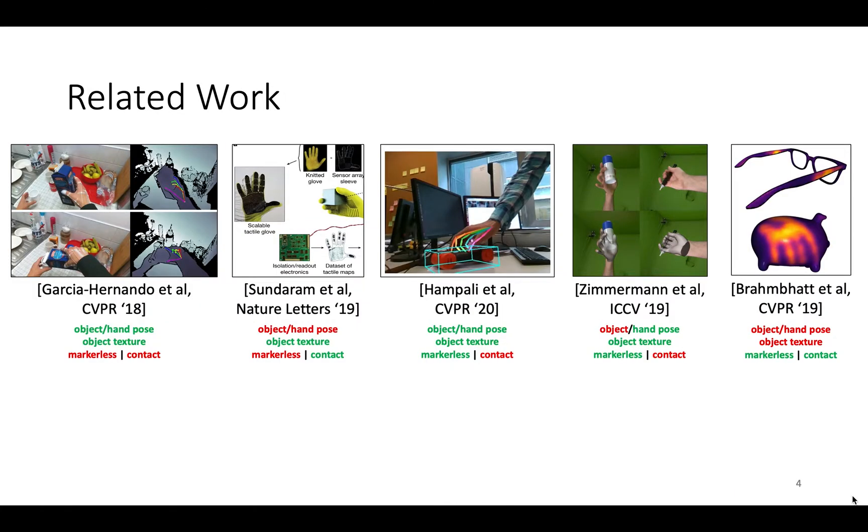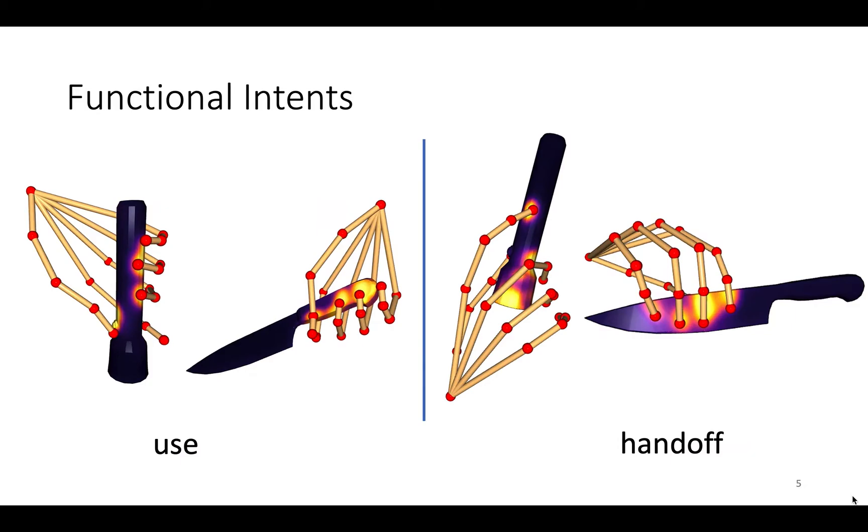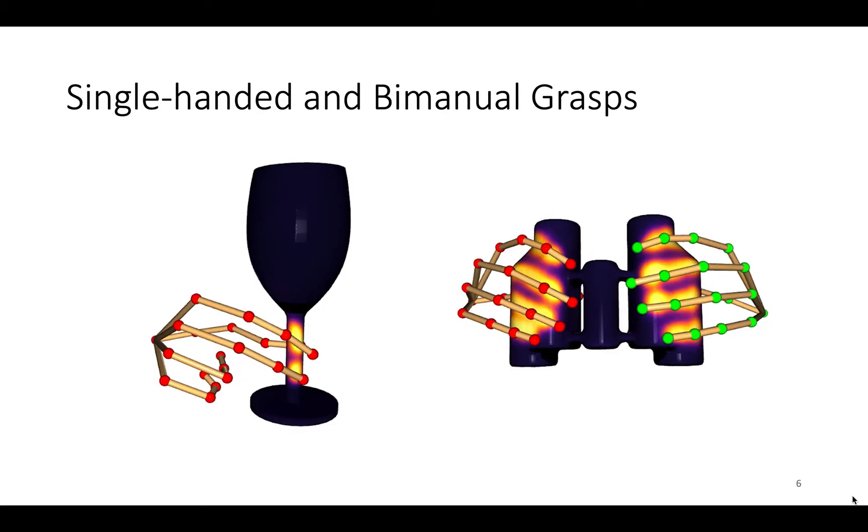In contrast to other datasets, we measure contact using thermal imagery and accurately capture hand and object pose. ContactPose has grasps with two functional intents and single-handed as well as bimanual grasps.